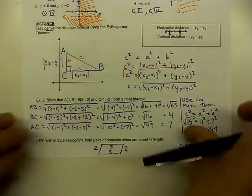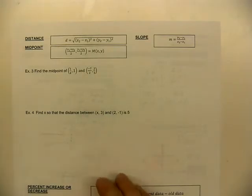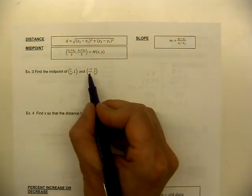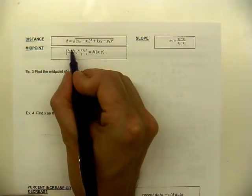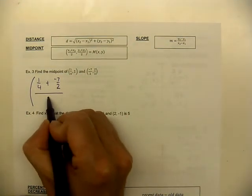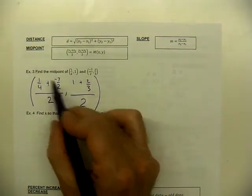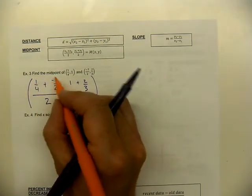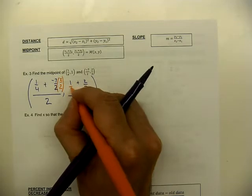Now let's look at the midpoint formula. Example three involves fractions inside the midpoint formula — things you've seen before but asked in new ways. The midpoint formula says add up the x-coordinates over two: that's one-fourth plus negative seven-halves, all over two. The y-coordinates are also added and set over two. Adding fractions requires a common denominator, so multiply negative seven-halves by two over two to get fourths.